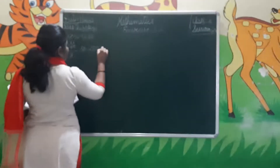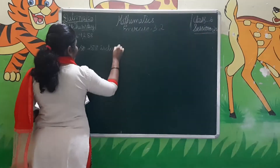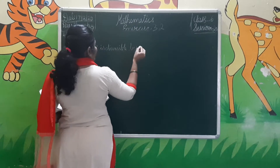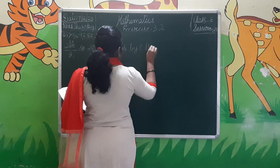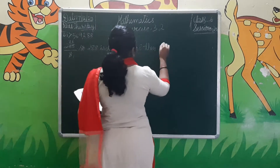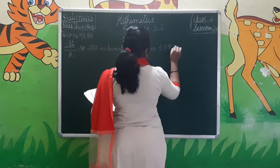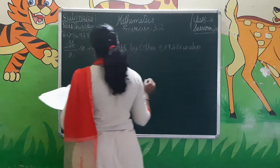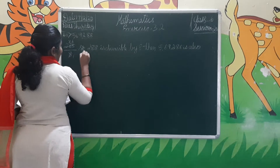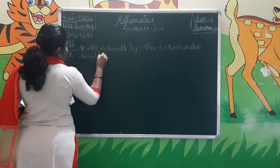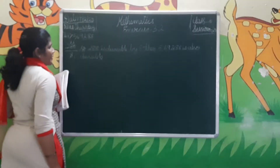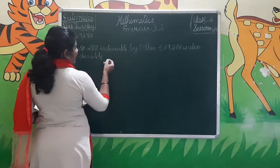288 is divisible by 8. Therefore, 569,288 is also divisible by 8. Instead of dividing the complete number, if you take the last 3 digits and they are divisible by 8, then the complete number is divisible by 8 itself.